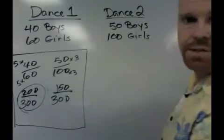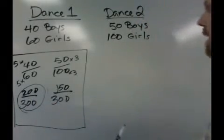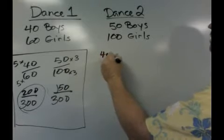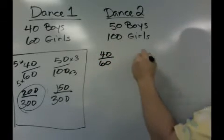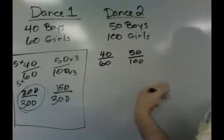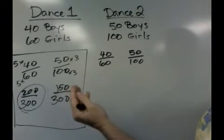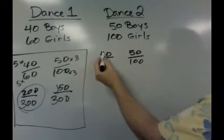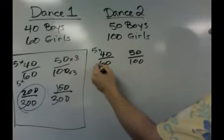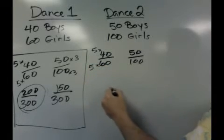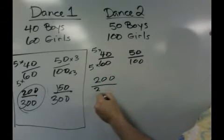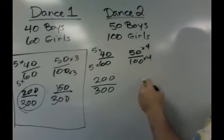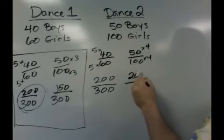That's when we were able to make that decision because we got common denominators. If we get common numerators, we're going to find the exact same story. So let's write the two ratios again: 40 to 60 and 50 to 100. This time, let's get a common numerator of 200. So 40 times 5 gives us 200, and 60 times 5 gives us 300 — that's 200 and 300. Over here, 50 times 4 and 100 times 4 means we've got 200 and 400.